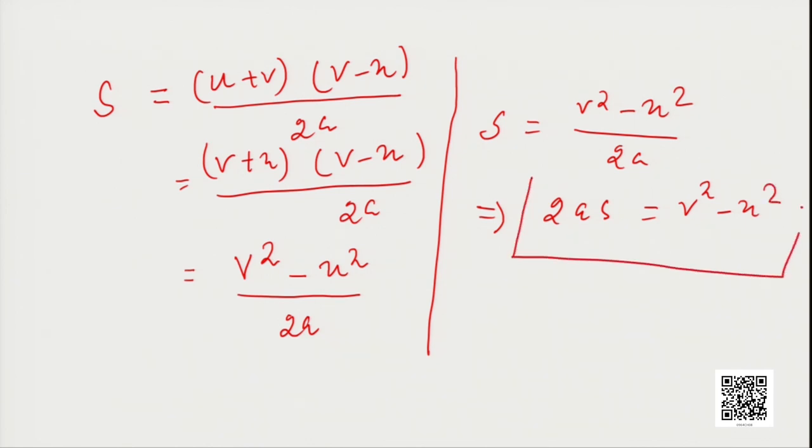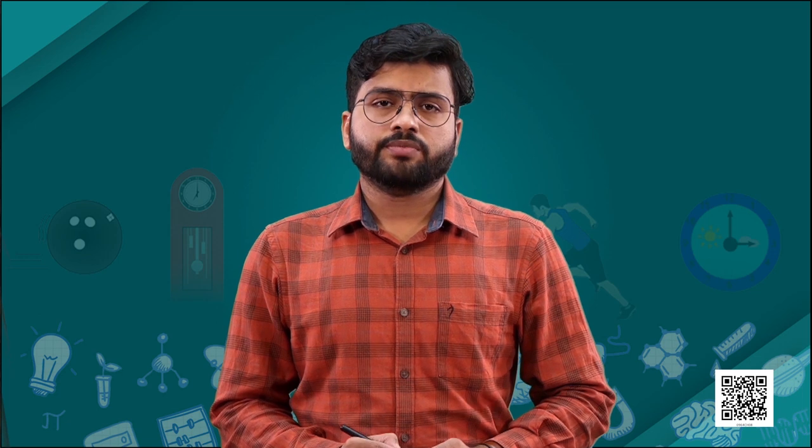Rearranging, we get 2AS equals V squared minus U squared. This is the third equation of motion. So students, you have seen how we can derive all three equations of motion by the graphical method. These three equations are called the equations of motion. Now, to see their application, we will solve some numericals.